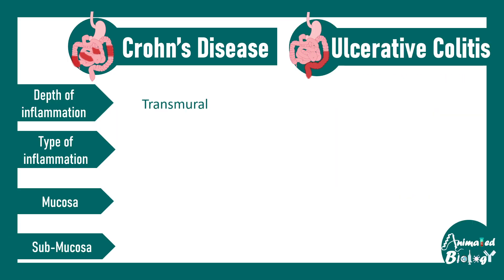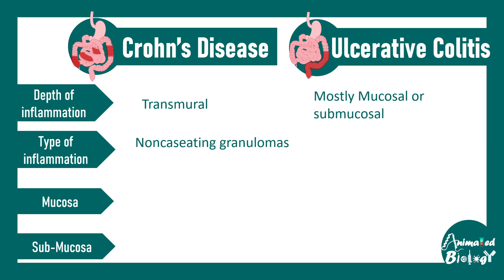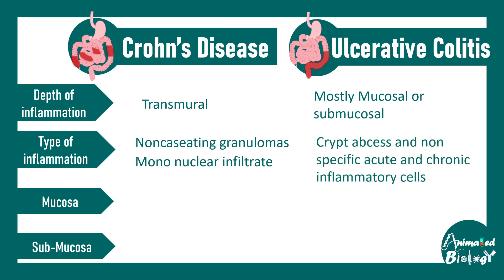In terms of depth of inflammation, Crohn's disease is transmural — it spans the entire thickness of the GI wall. Ulcerative colitis is more superficial, involving the mucosal and to some extent the submucosal level. Non-caseating granulomas form with mononuclear infiltration in Crohn's disease. Crypt abscesses are quite common in ulcerative colitis, and there can be infiltration of several different inflammatory cells.